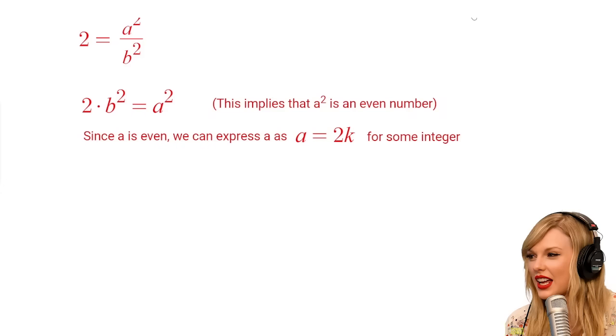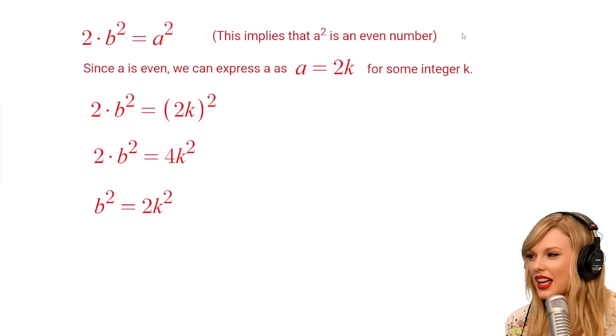Substituting this back into the equation, 2 times B squared equals A squared gives us 2 times B squared equals 4 times K squared. Dividing both sides by 2 means that 2 times K squared equals B squared. This implies that B squared is also even.